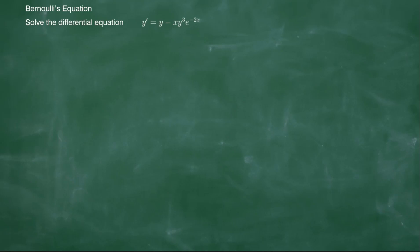Bernoulli's equation: solve the differential equation y prime equals y minus xy cubed times e to the negative 2x. First, we write y prime as dy over dx, so we have dy over dx equals y minus x times y cubed times e to the negative 2x. We want to write this in the standard form for Bernoulli's equation, so we subtract y from both sides.